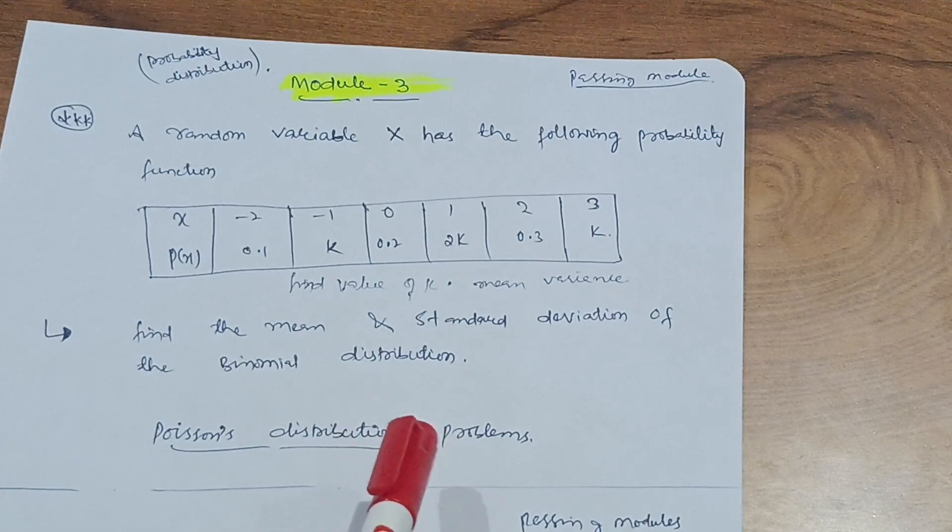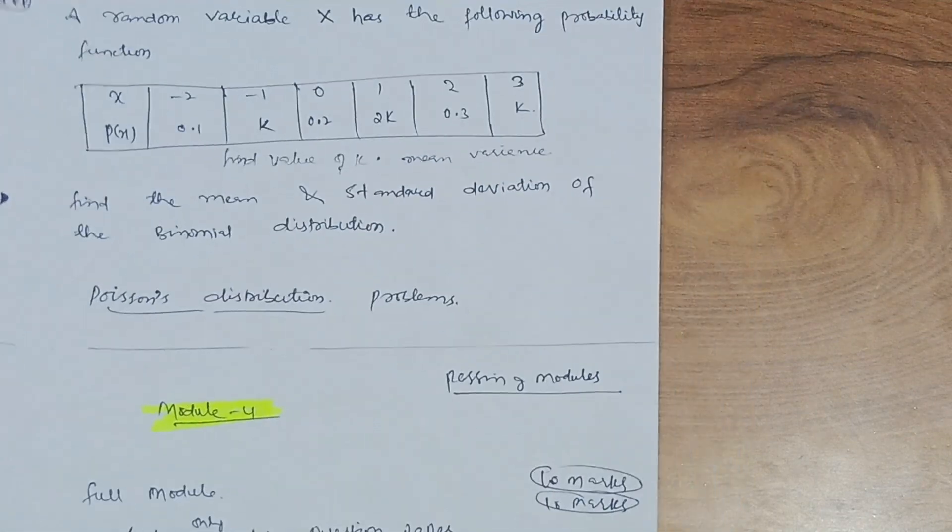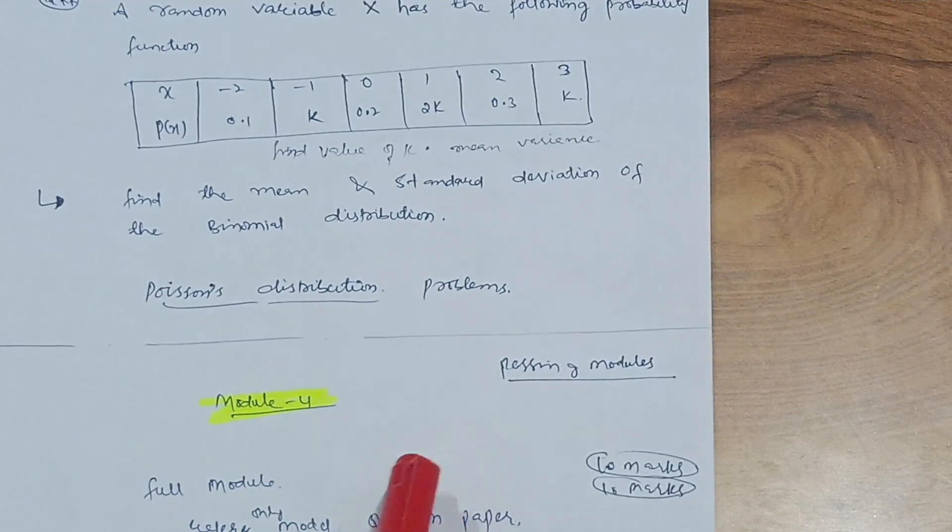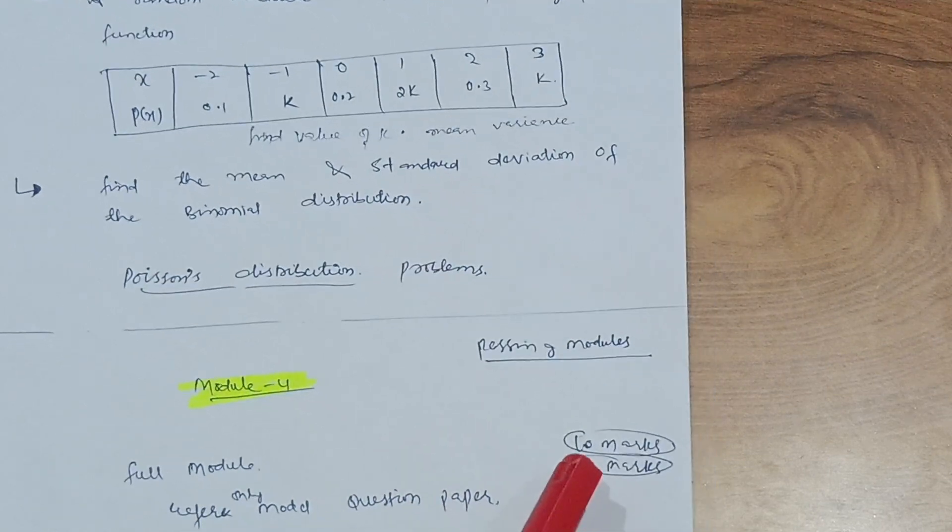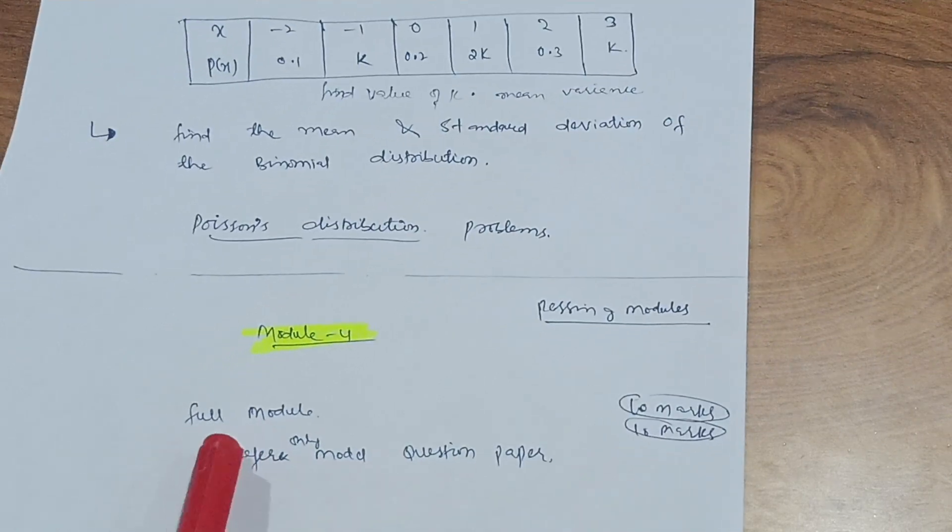These were the important questions regarding this particular three modules. Then module 4 and module 5, if I will tell you, this is also a passing module and module 5 is also a passing module. It carries 10 marks, 10 marks question will be there, two questions. You have to go through the full module and just refer only module question papers.